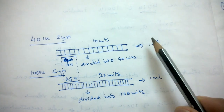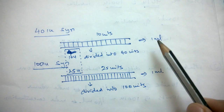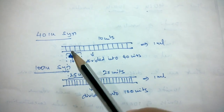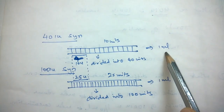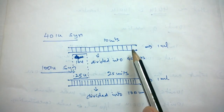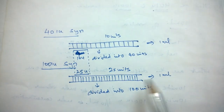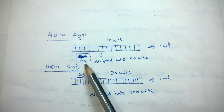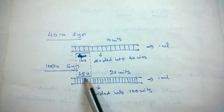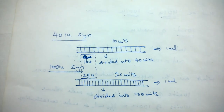The total quantity in both syringes is the same — 1 ml — but the readings differ. In a 40 international unit syringe, 1 ml is divided into 40 units, whereas in a 100 international unit syringe, 1 ml is divided into 100 units. This means 10 units on a 40 IU syringe is equal to 25 units on a 100 IU syringe, which I'll explain with a calculation.